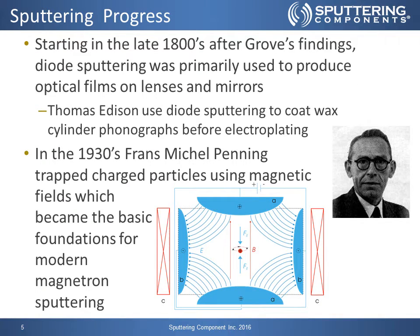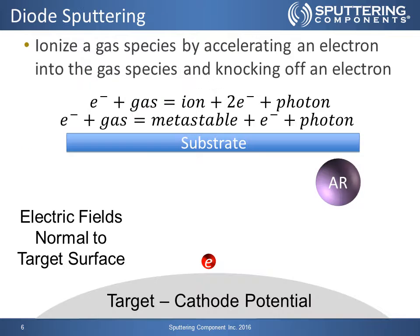Shortly after Grove's findings in the late 1800s, people started using diode sputtering to produce optical films on lenses and mirrors. Thomas Edison even used diode sputtering to coat his wax cylinder phonographs before electroplating them. In the 1930s, Franz Michel Penning trapped charged particles using magnetic fields, which became the basic foundations for modern magnetron sputtering.